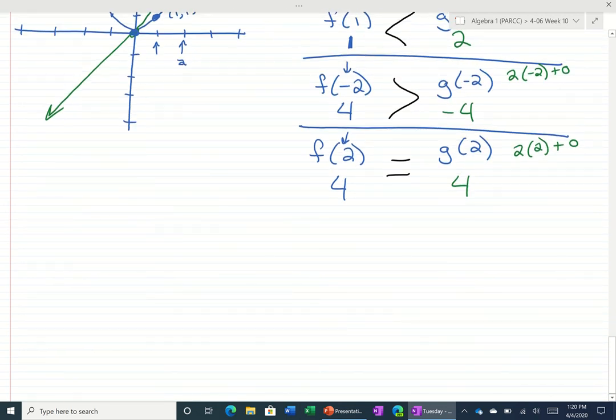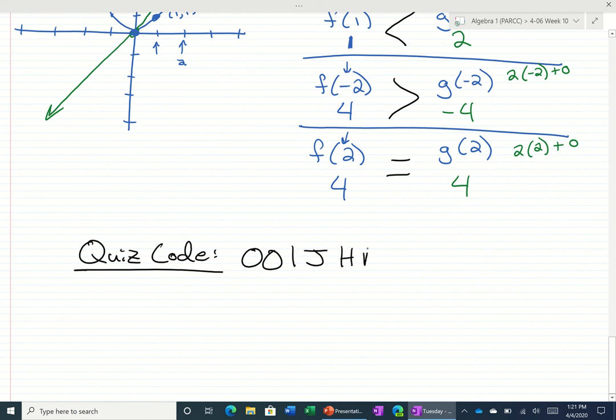All right, so that should be good enough for week 5 and packet 5. If I linked for the quiz, just click on that link. And the quiz code is going to be 001JHNBN.